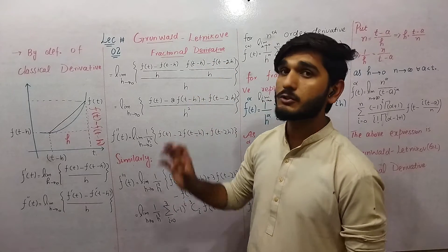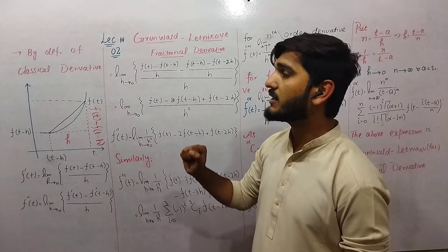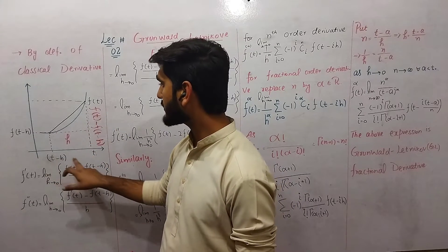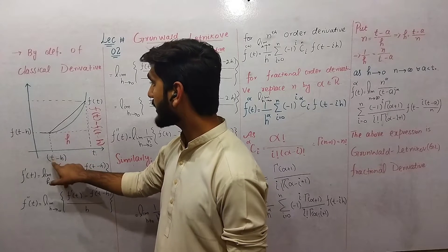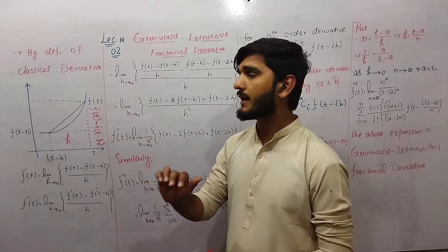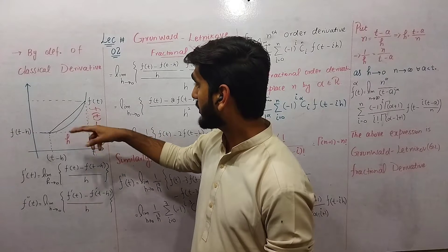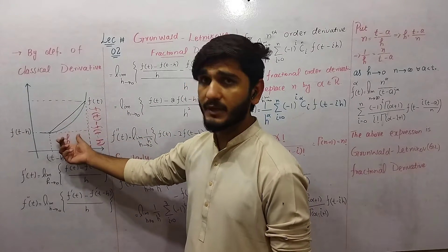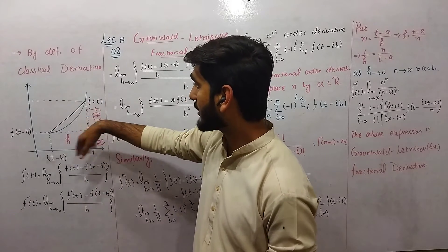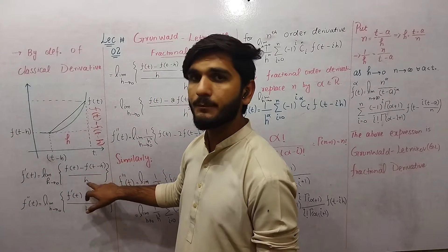To find the Grünwald fractional derivative formula, we will use the definition of the ordinary derivative from classical calculus. To elaborate that definition we use a graphical explanation. Let f be a function of t described on the interval from t minus h to t. The result at t minus h is f(t minus h) and at t is f(t). The derivative is defined as the slope of the tangent line, which is the ratio of the perpendicular to the base. So f prime of t is given as the limit as h approaches 0 of f(t) minus f(t minus h) over h.